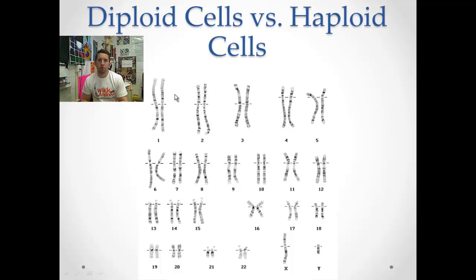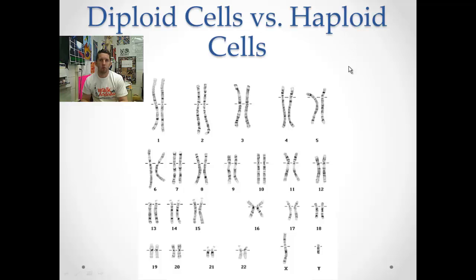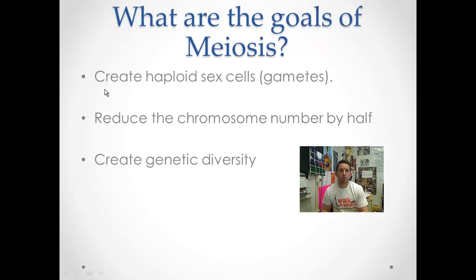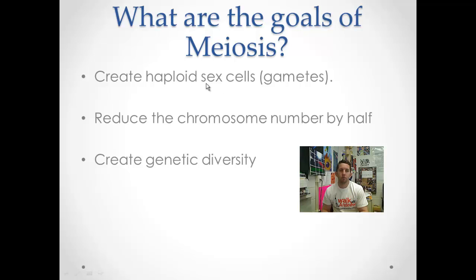Mom's 23 chromosomes are what she contributes to fertilization. If the sperm that fertilizes the egg happens to carry a Y chromosome, the developing embryo will be male. If it has an X, the embryo will be female. So remember: diploid means two versions of every chromosome; haploid means one version of every chromosome. That's going to be important because, after all, one of our goals is to create haploid sex cells — to reduce from diploid to haploid.